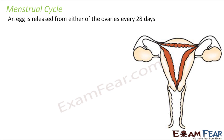Based on whatever we have studied in our previous lesson, we know that every 28 days there is one egg which gets released from either of the ovaries. You have two ovaries — let us suppose this is the right ovary and this is the left ovary. From any of these ovaries, one egg will be released into the fallopian tube every 28 days. This is the ovary, and this is the fallopian tube.